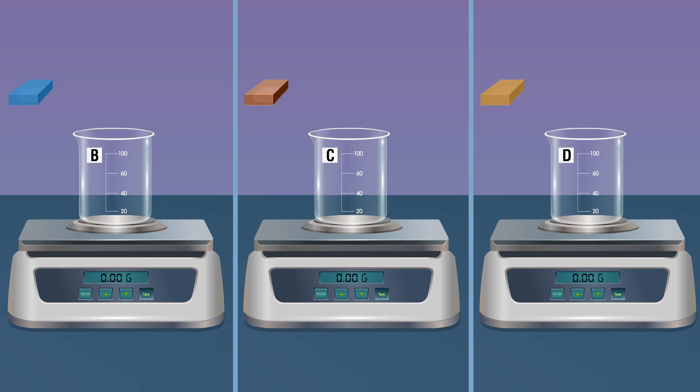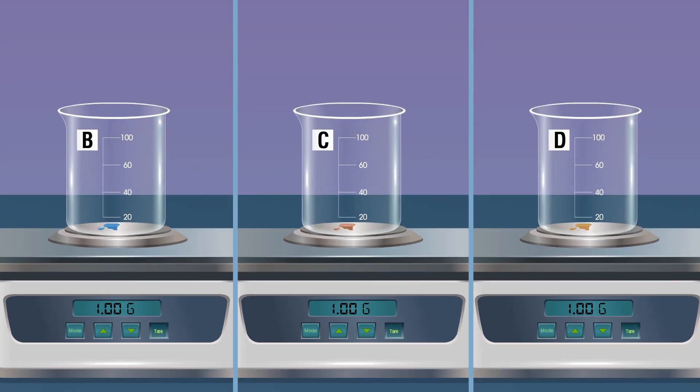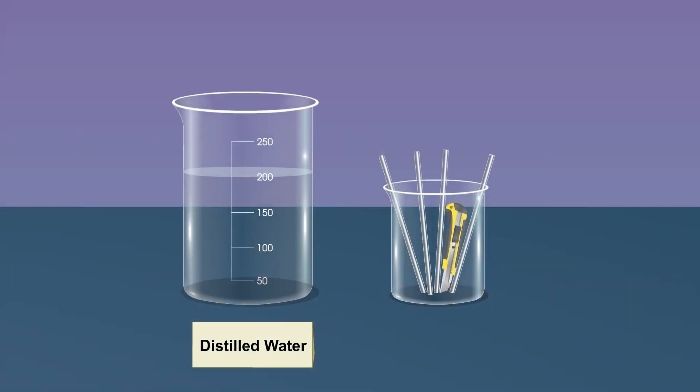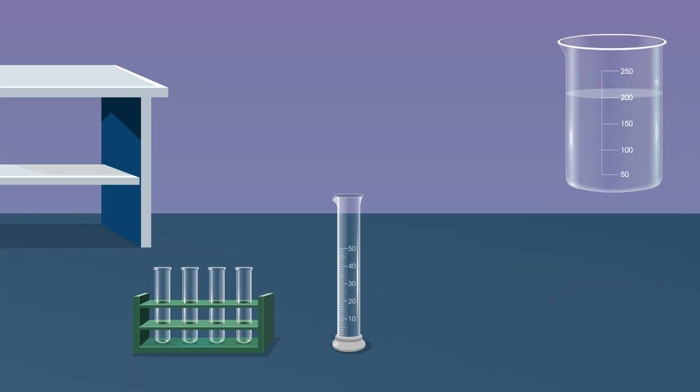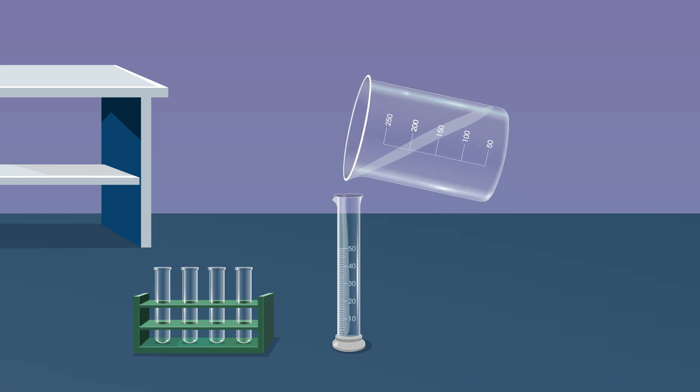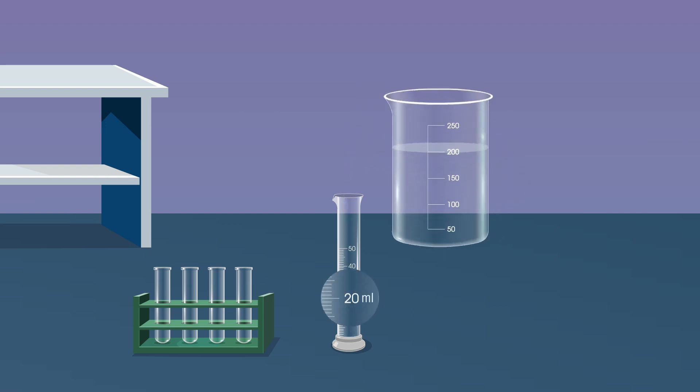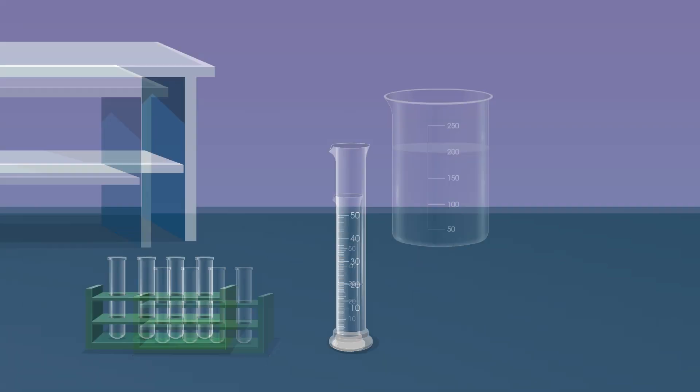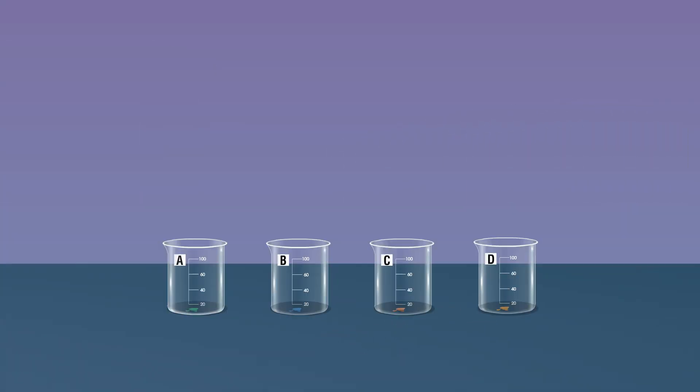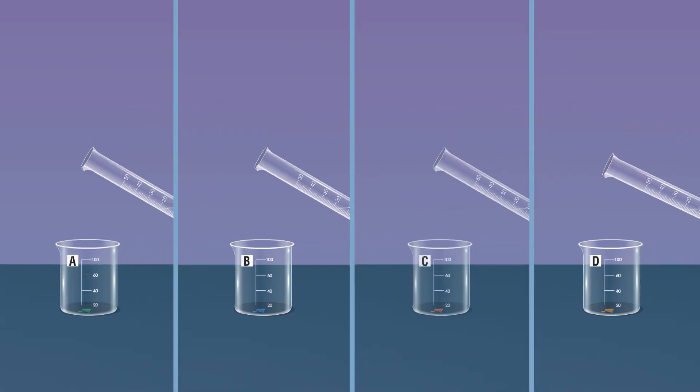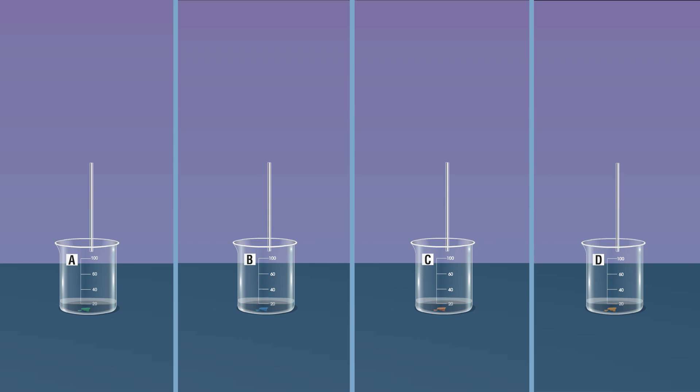Add 20 ml of distilled water to all the soap samples using a measuring cylinder from the beaker containing distilled water. Dissolve the soap in water by stirring the mixture with a glass rod.